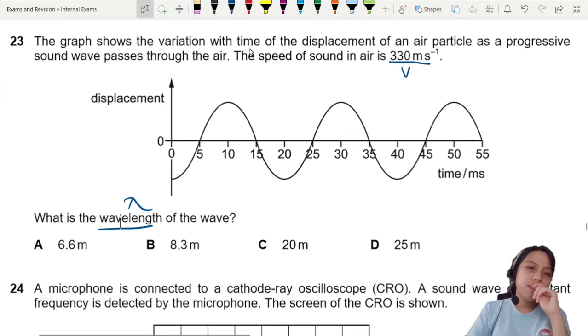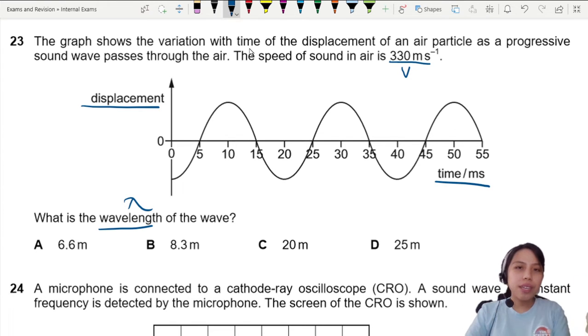Be careful, this is displacement against time. If I read one full cycle, say from here to here, one full cycle, this is going to give me period, not wavelength, because this is in the time domain.